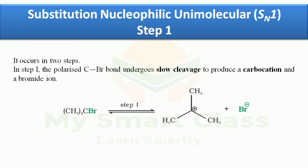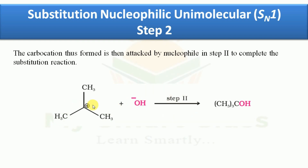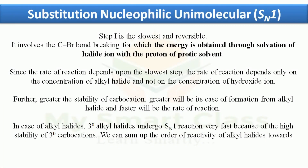In the mechanism of SN1, Step 1 is the slow step: the carbon-bromine bond breaks and a carbocation is formed. The energy for breaking the C–Br bond is obtained through solvation of the halide ion by the protic solvent. Because of this, the rate does not depend on the concentration of hydroxide ion but only on the rate-determining step — Step 1.